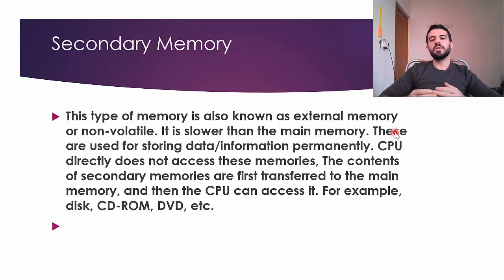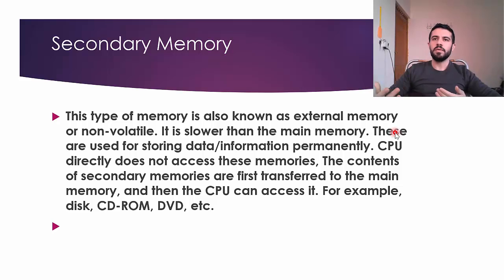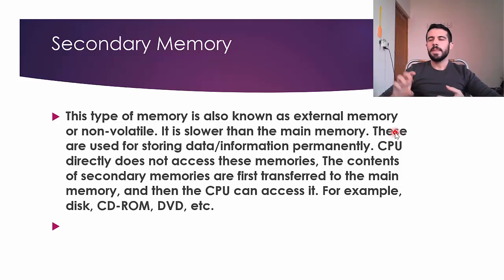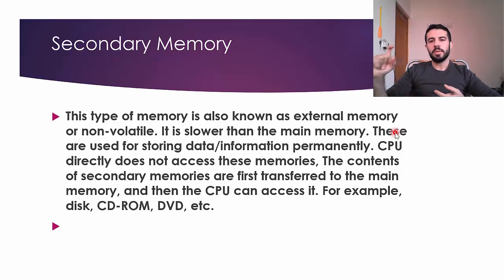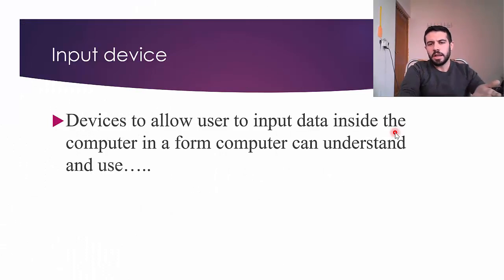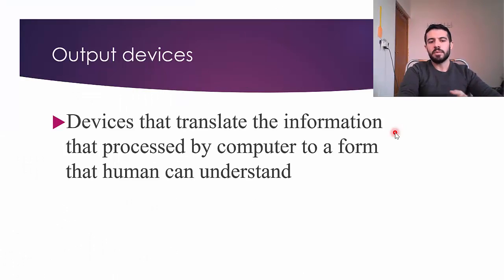Secondary memory is also known as external or non-volatile memory — the opposite of RAM — meaning data is always stored permanently. Examples include flash memory, hard drives, CDs, and DVDs. The CPU cannot directly access this memory; for example, with a hard drive, data must first be sent to RAM (main memory) before the CPU can interact with it.